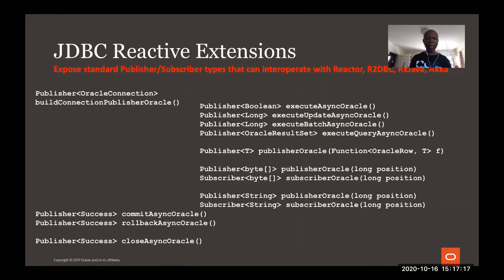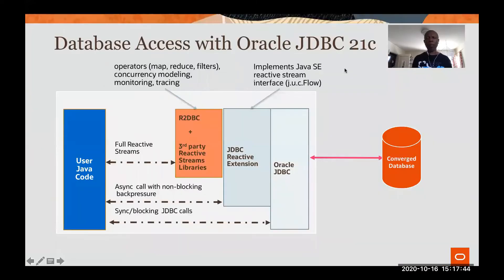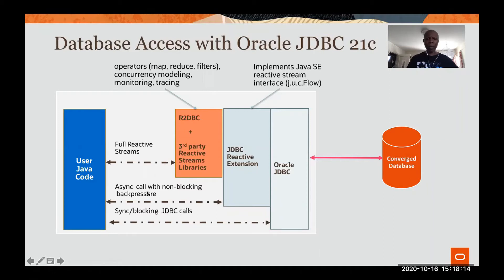The reactive extensions expose standard publisher/subscriber types that can interoperate with Reactor, R2DBC, RxJava, and AkkaStreams — which are higher-level frameworks that people use to do reactive programming. This is the big picture of everything you'll be able to do with JDBC when the 21C release goes out. You are familiar with the traditional Oracle JDBC drivers used for synchronous blocking calls — you make a call to the database, you have to wait. With the reactive extension, you can now do async calls with non-blocking back pressure, implementing the java.util.concurrent.Flow API.